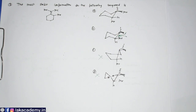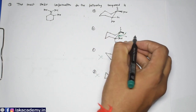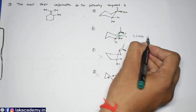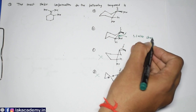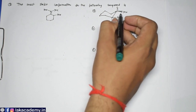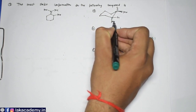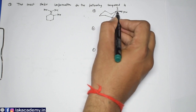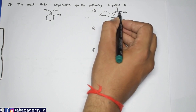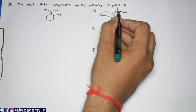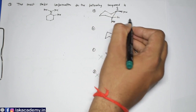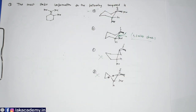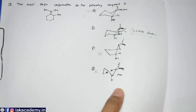1,3-Allylic strain also occurs in another option, but there the methyl is at the axial-like position while the other group is in an equatorial-like position. In the conformation where there is no allylic strain, option A will be the correct answer. This is discussed further in the stereochemistry video.